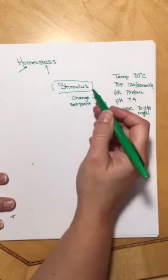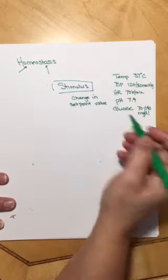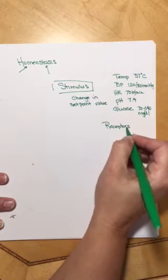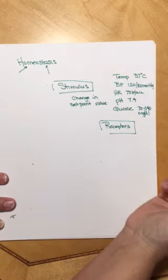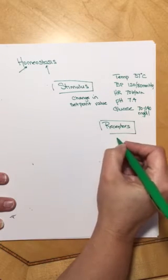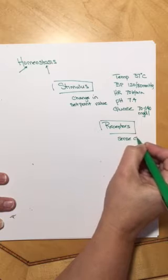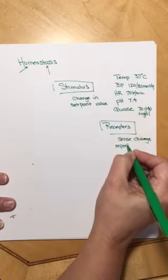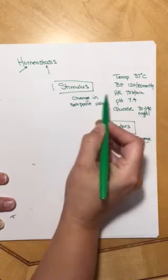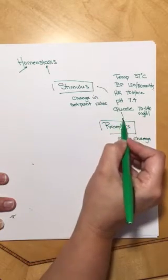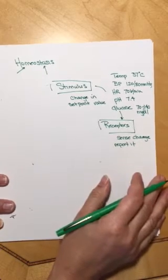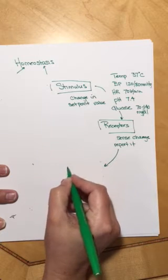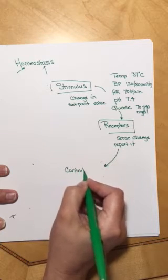For the stimulus to have any effect, we have to have something called a receptor. We're going to talk a lot about receptors when we get to the nervous system, but for now all you need to know is that a receptor is going to sense the change in the stimulus and report it. So we have a stimulus that's going to cause a receptor to do something, and the receptor is actually going to report the change to an area of the body called the control center.